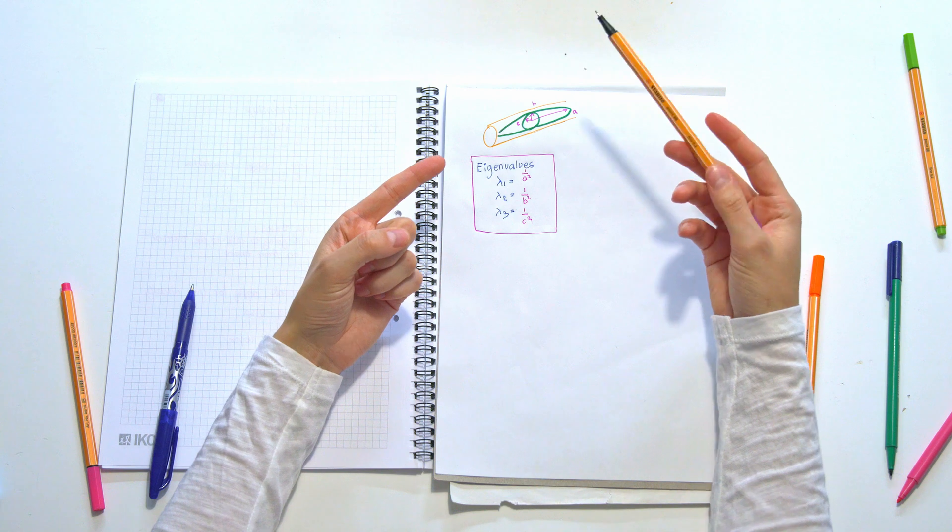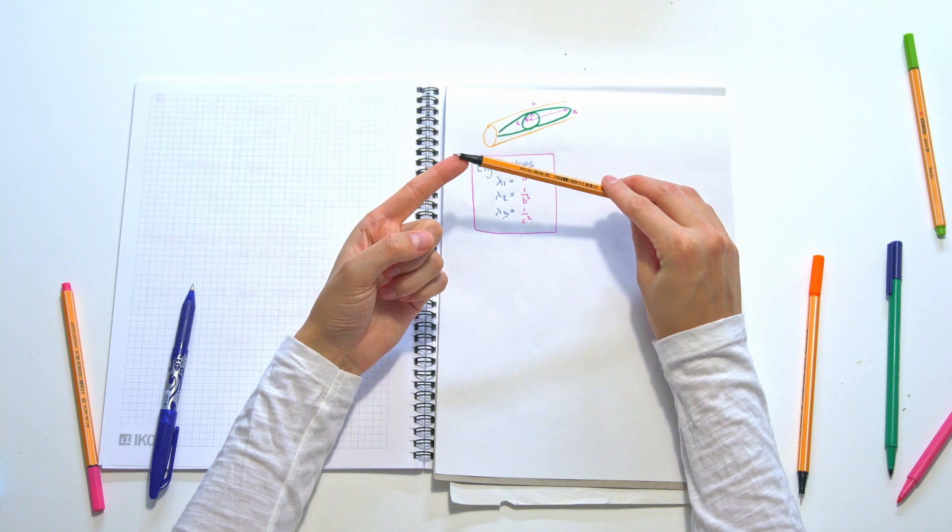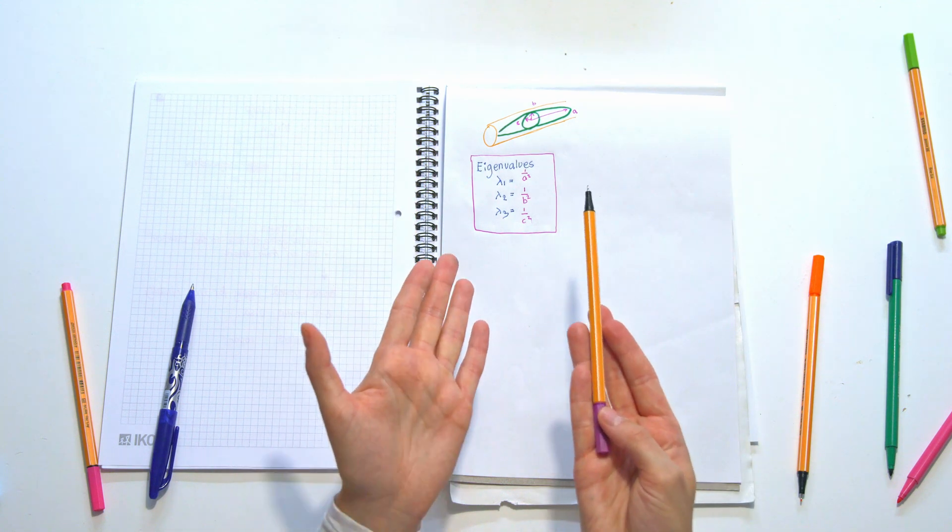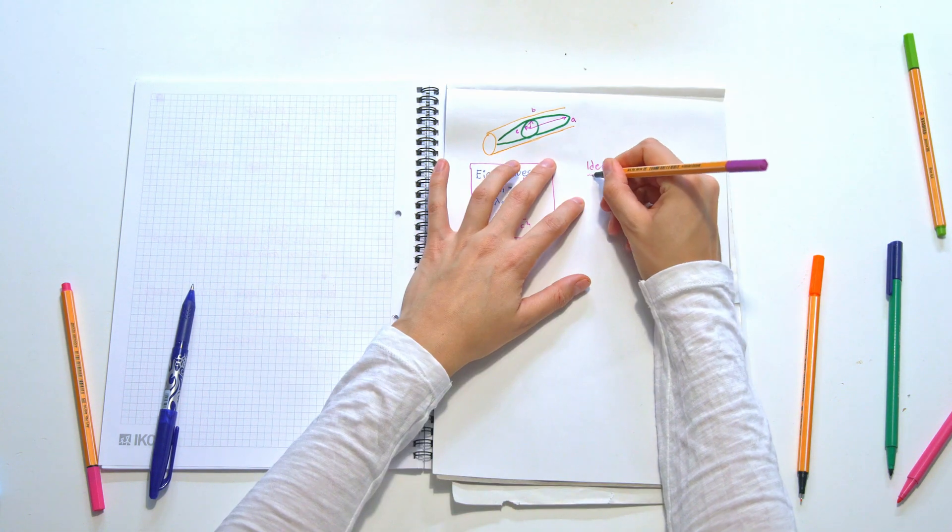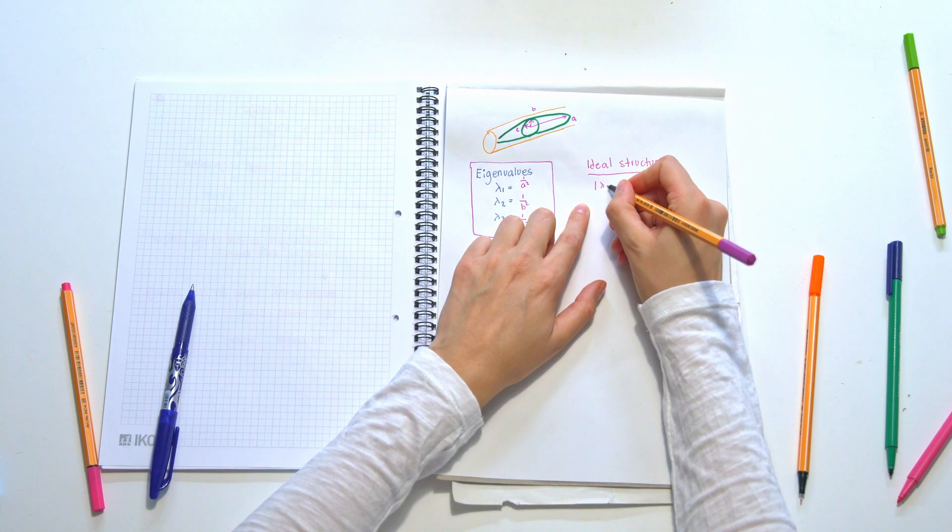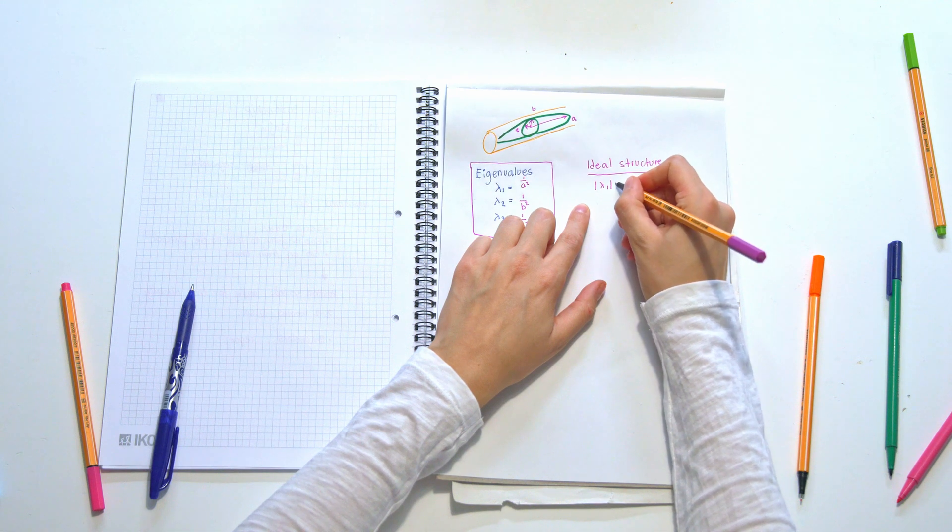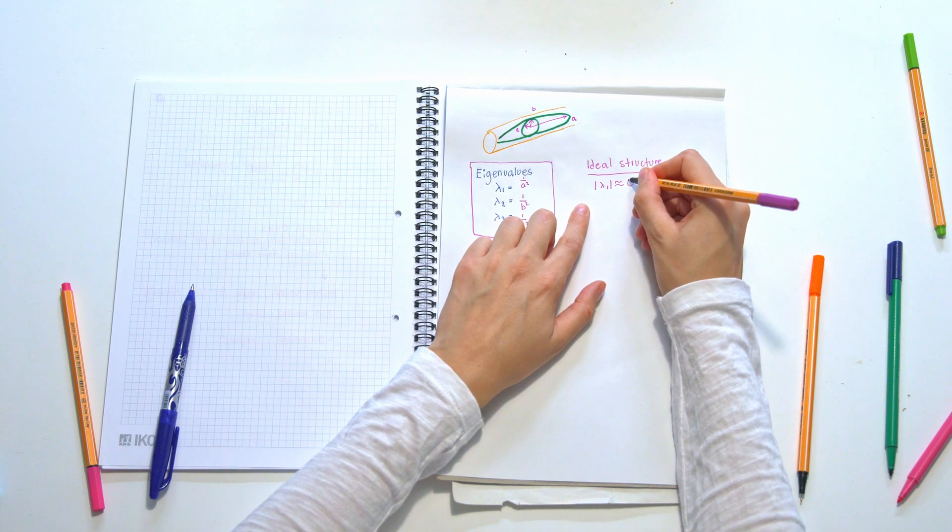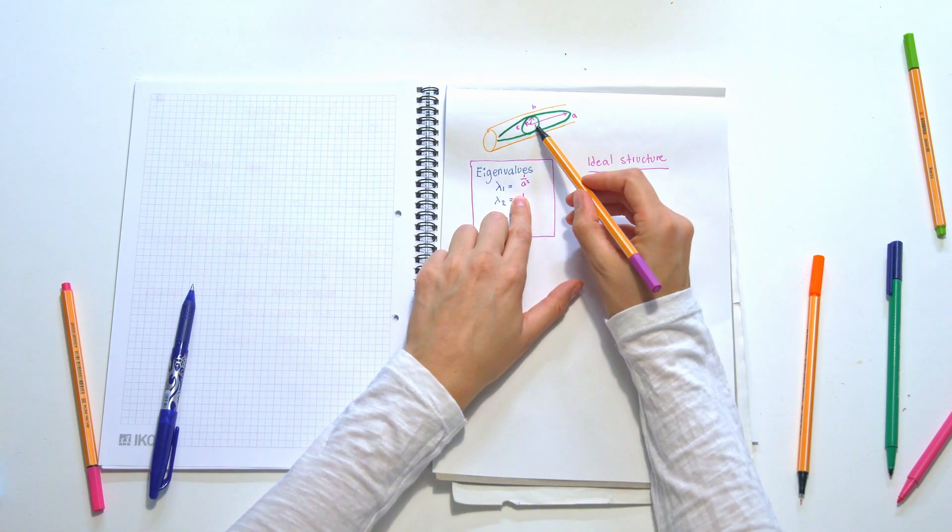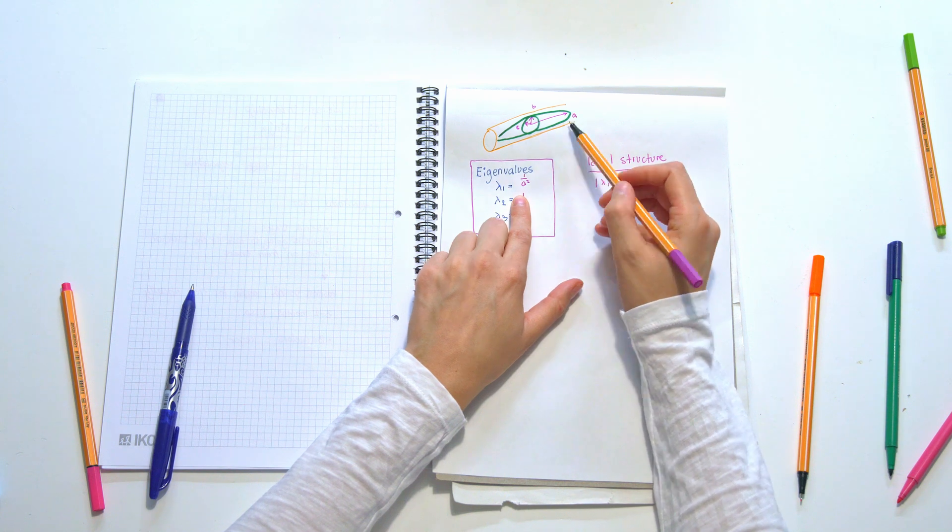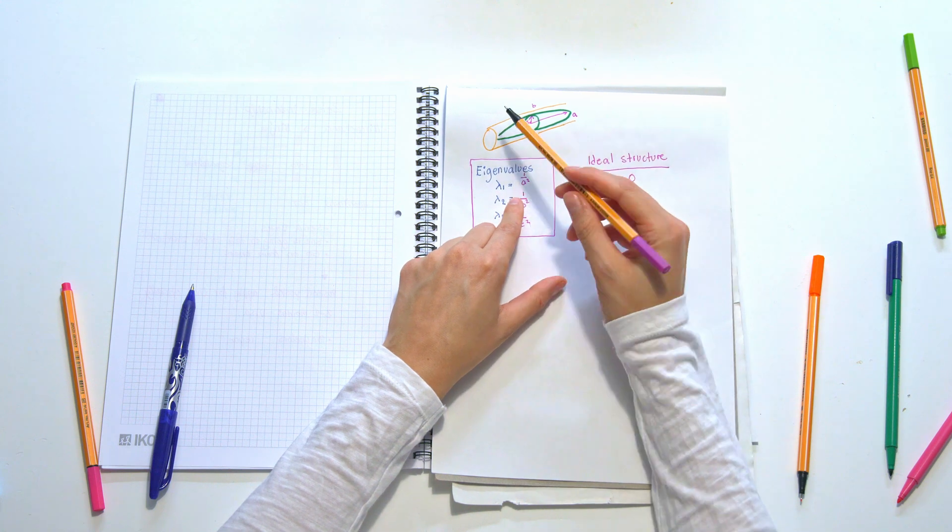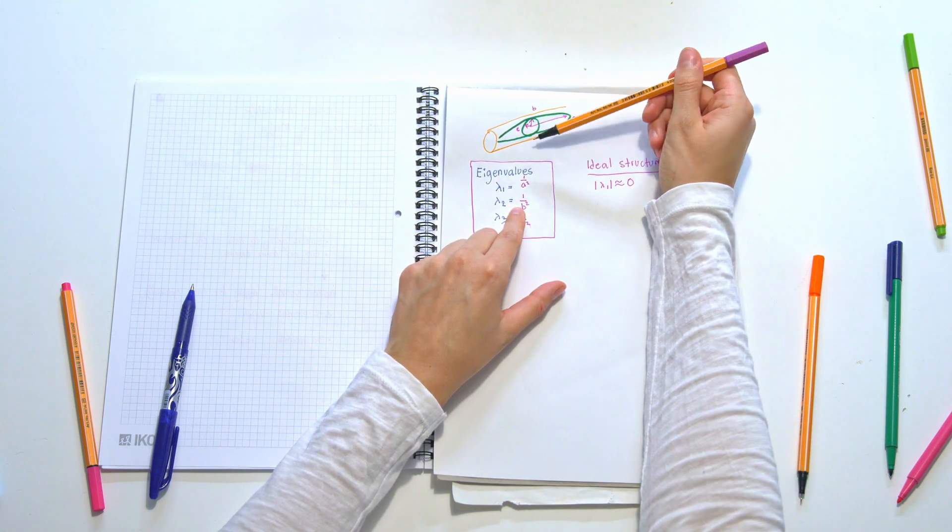This is basically the most important information that we gain, and this will help us find if it's more of a vessel or a blob or a plate. So the ideal structure is the absolute value of lambda 1 should be almost equal to 0. We want it to be as small as possible because we divide by a and we want a to be big, because a tubular structure is long on this axis.